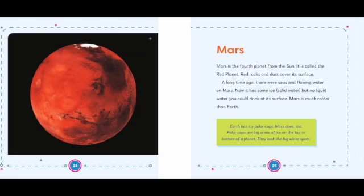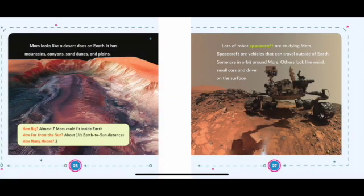Mars looks like a desert does on Earth. It has mountains, canyons, sand dunes, and plains.